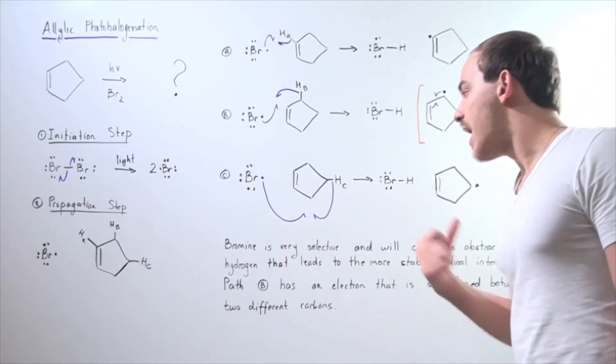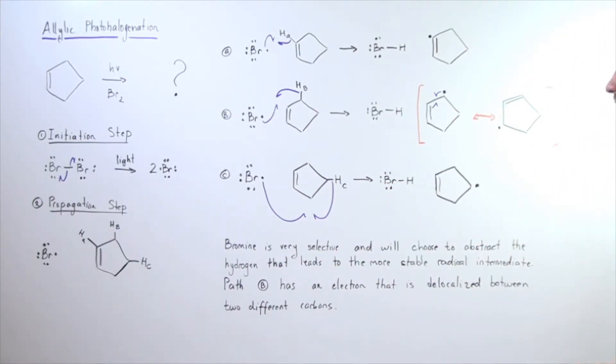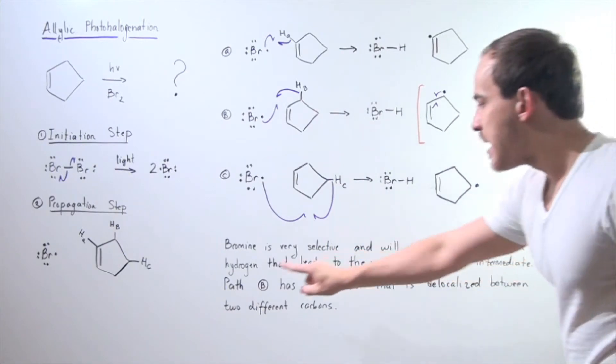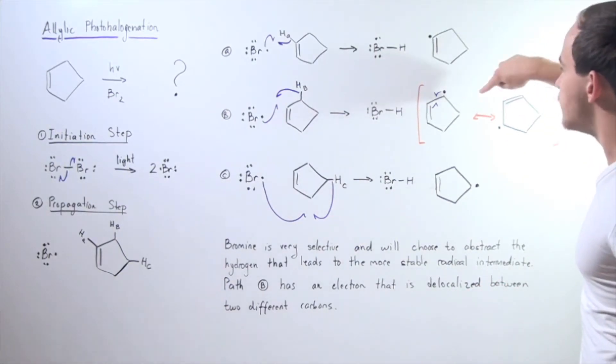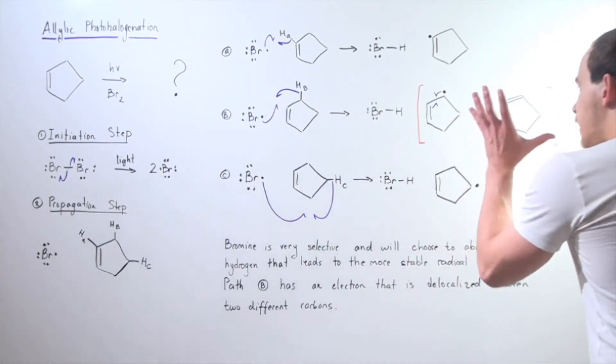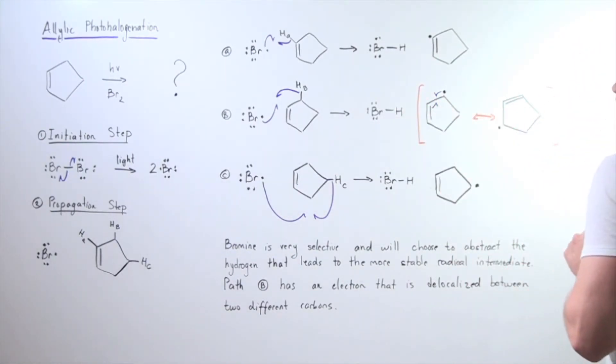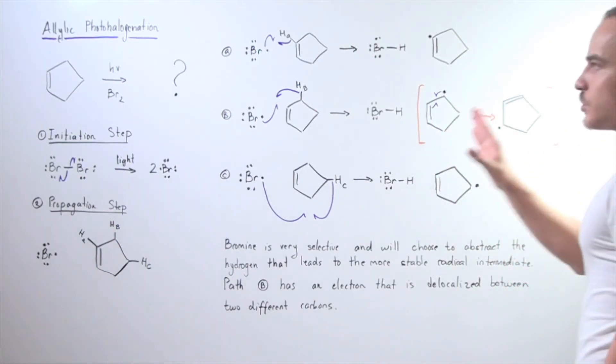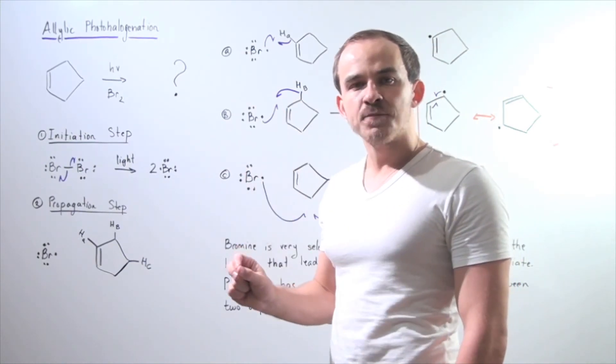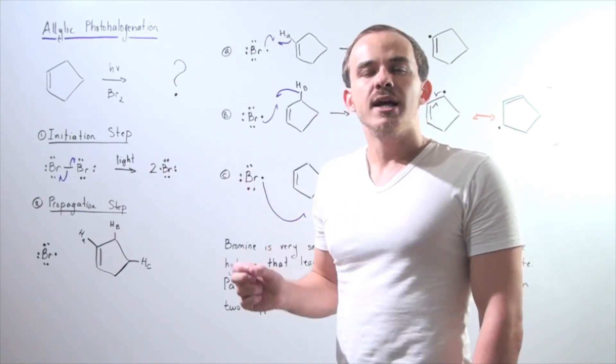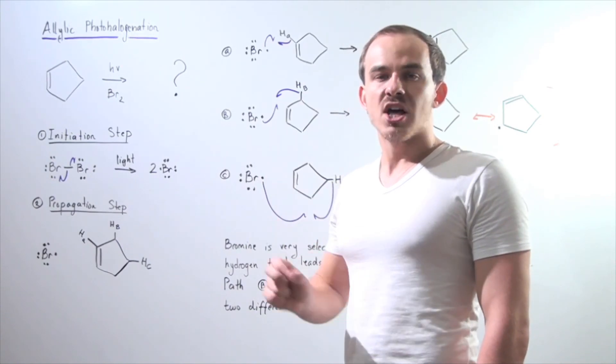So in conclusion, bromide is very selective and will choose to abstract the hydrogen that leads to the more stable radical intermediate, namely pathway B. Pathway B has an electron that is delocalized between two different carbons, between this carbon and this carbon, so it jumps from this carbon to this carbon. Notice that the actual picture, the actual structure of this molecule, is somewhere in between. It's a combination of these two Lewis dot structures. So to conclude, whenever we have the following photohalogenation reaction, because bromide is so selective, it will always abstract the H atom that will lead to the more stabilized radical intermediate.